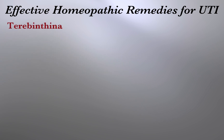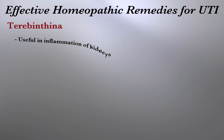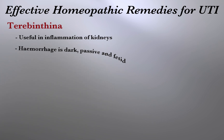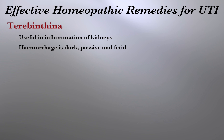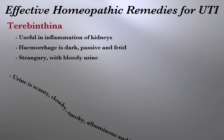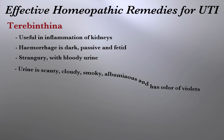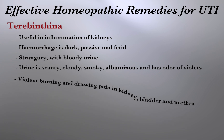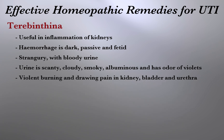The sixth remedy is Terebinthina. It is useful in inflammation of the kidneys with hemorrhage which is dark, passive, and fetid. The patient complains of strangury with bloody urine. Urine is scanty, cloudy, smoky, albuminous, and has an odor of violets. There is violent burning and drawing pain in the kidney, bladder, and urethra.